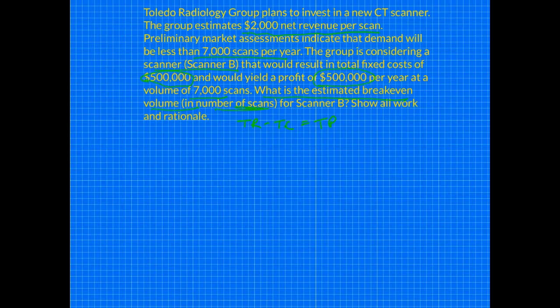The question asks for the estimated break-even volume in number of scans for Scanner B. Let's talk about break-even. When we use our profit equation, break-even simply means setting total profit equal to zero. We're going to deconstruct the revenue and cost components to figure out what volume gets us to zero. Anything above break-even, we're making money; anything below, we're not.